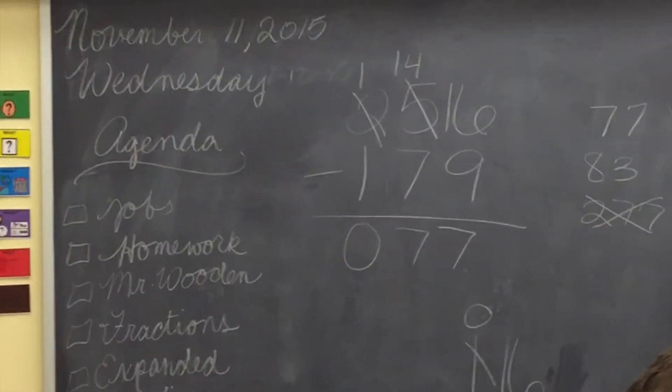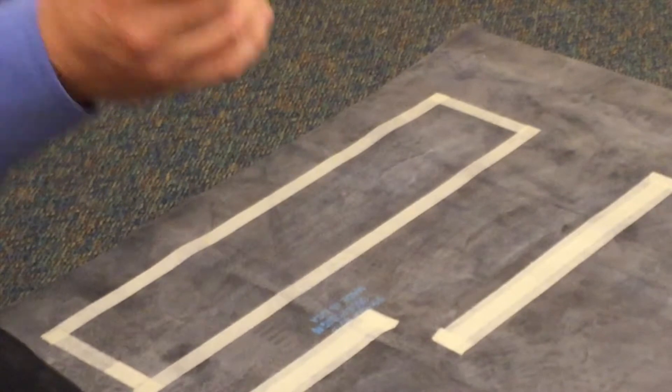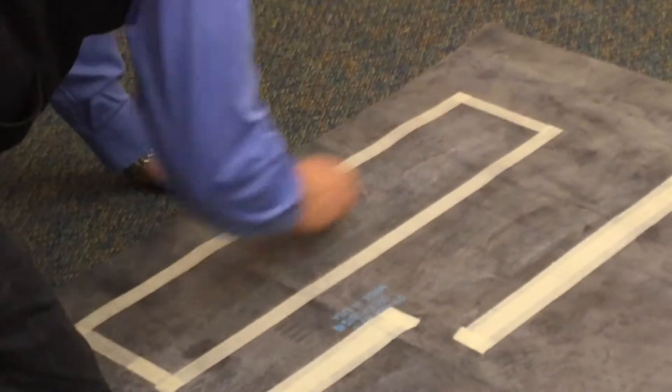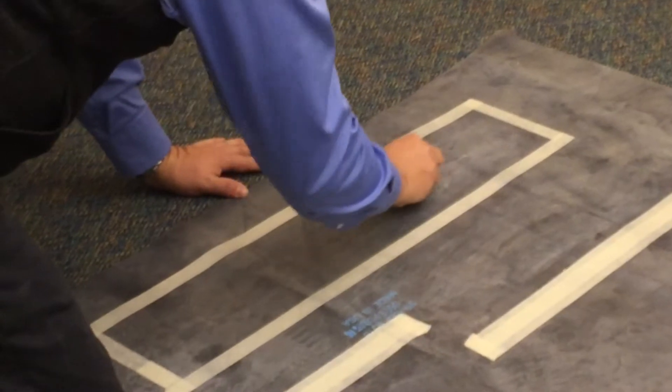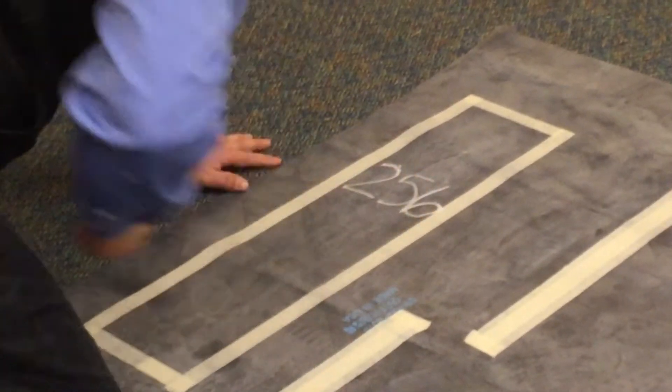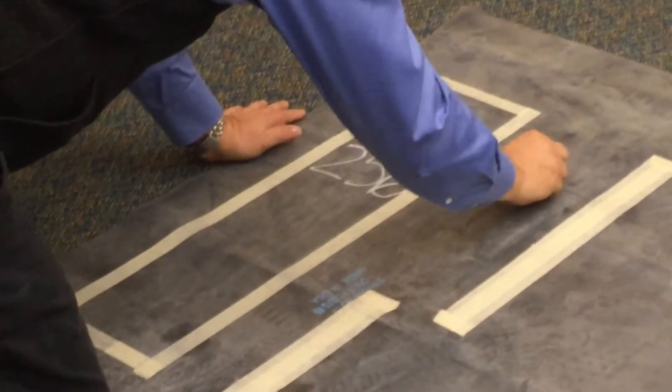Okay, so let's make a pumpkin patch. What's the total number of pumpkins in the field? Everybody. 256. Okay, this is my field. 256 pumpkins in there. Okay, how many got picked? 179.